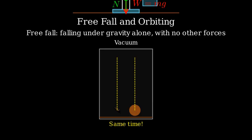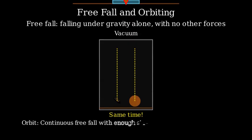A feather and a bowling ball would hit the ground at exactly the same time if dropped from the same height in a vacuum, as famously demonstrated by astronauts on the Moon. But what about orbiting?